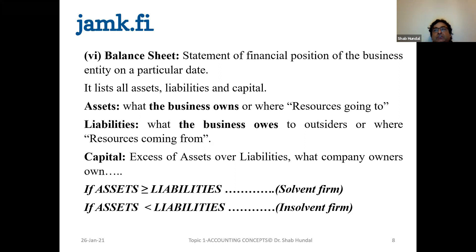Imagine a situation where the company's assets are 100 and liabilities are 130. In that case, the company's shareholders' equity becomes negative. If shareholders' equity or capital becomes negative, it means the company has no right to exist — the company becomes insolvent, the company becomes bankrupt. So the balance sheet is an existential proof of the firm.